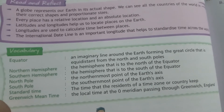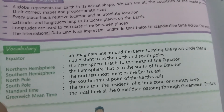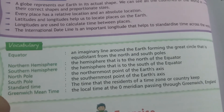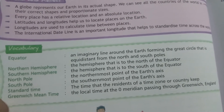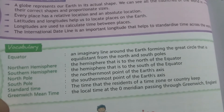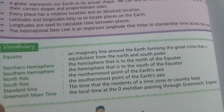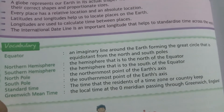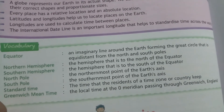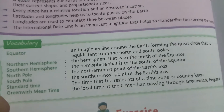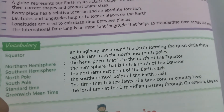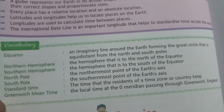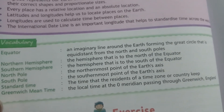Latitude and longitude are used to help us locate places on the Earth. Longitudes are used to calculate time between places. The International Date Line is an important line of longitude that helps us standardize time across the world. Whatever standard time is changing, the International Date Line is very important.